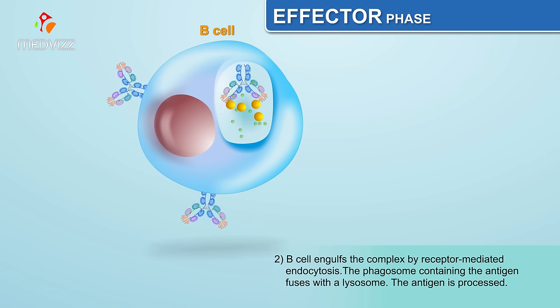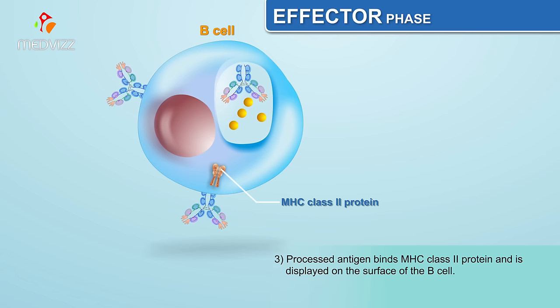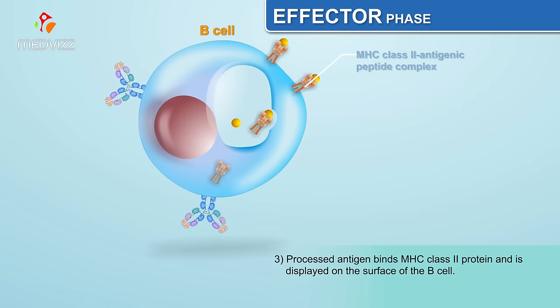The antigen is processed. The processed antigen binds MHC class 2 protein and is displayed on the surface of the B cell.